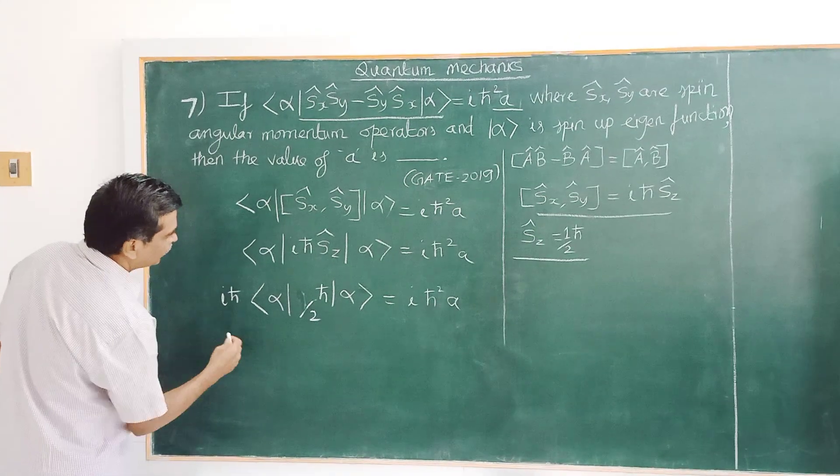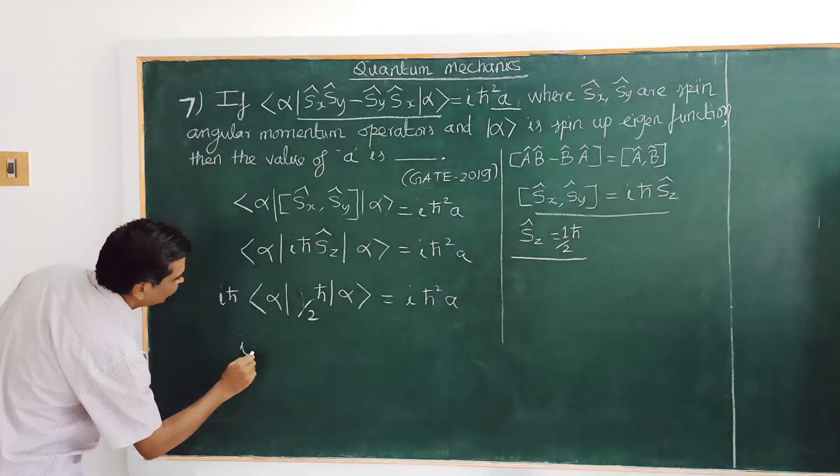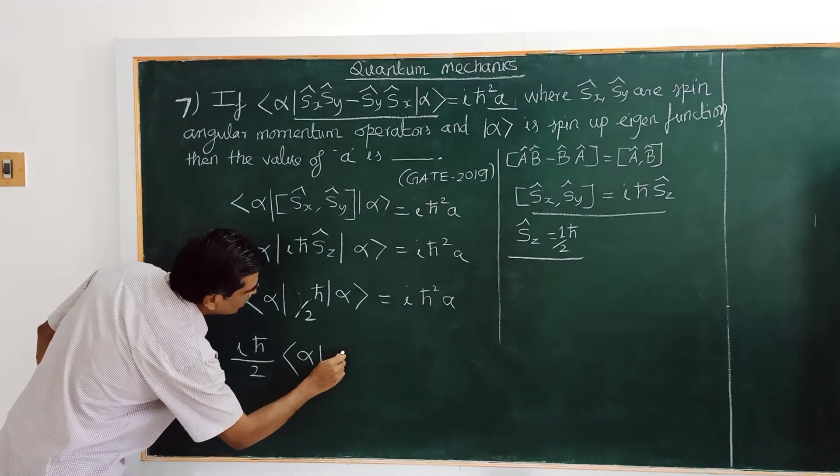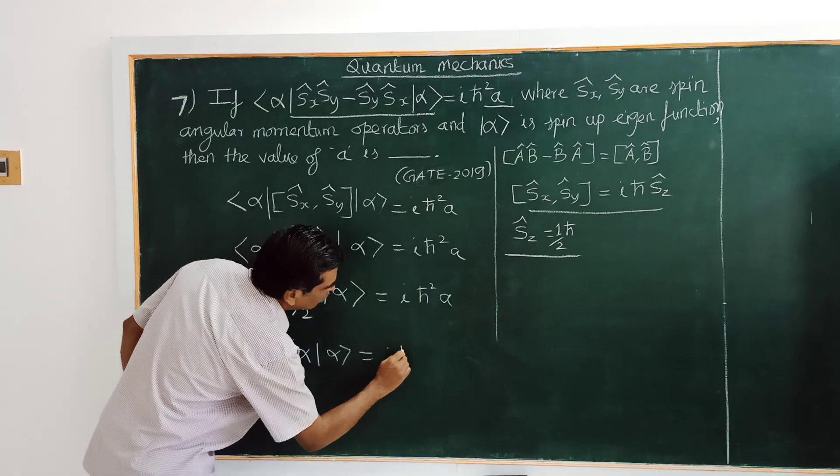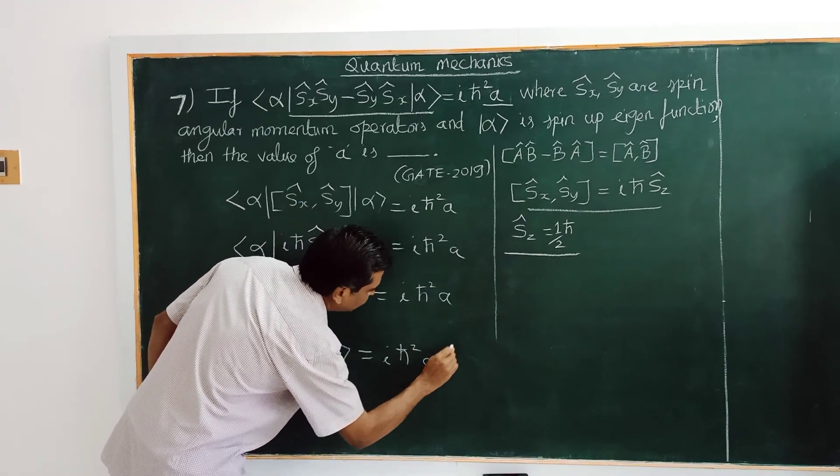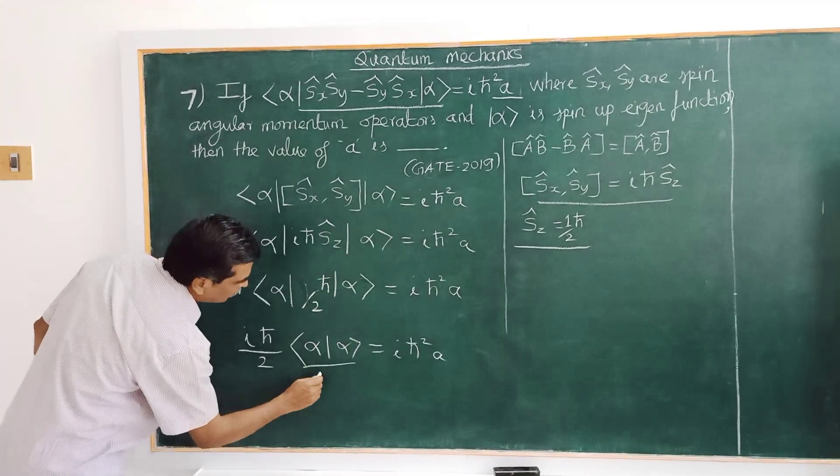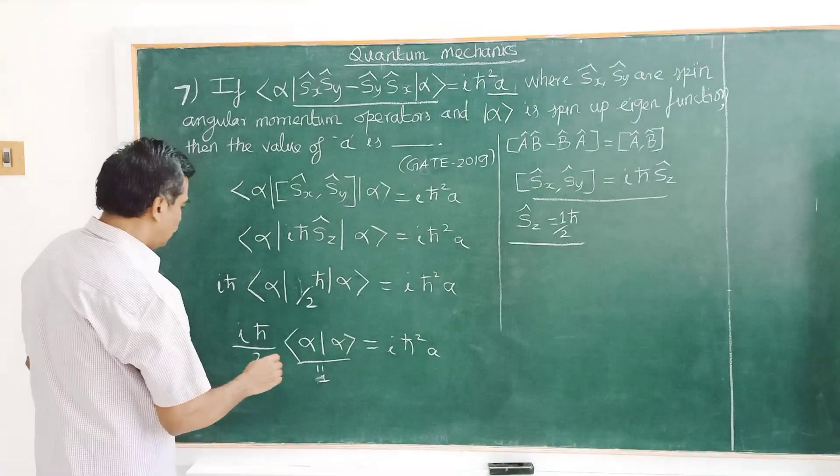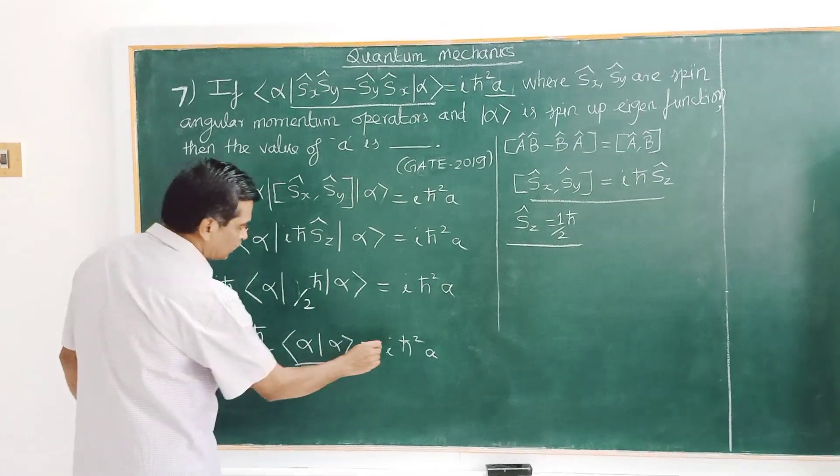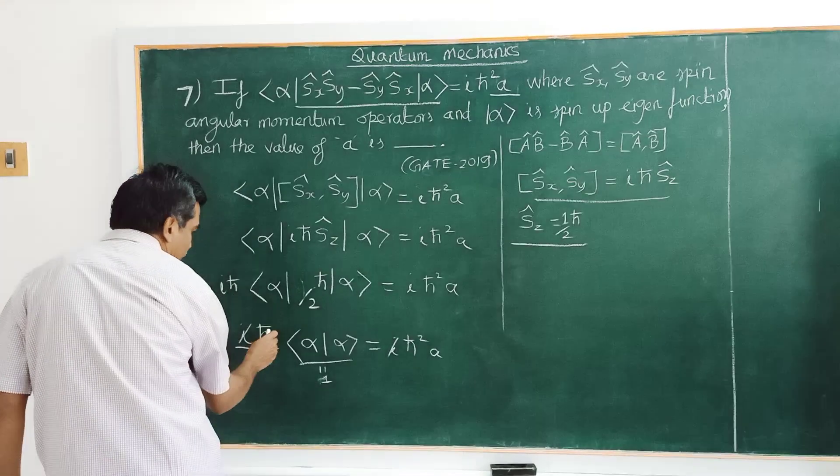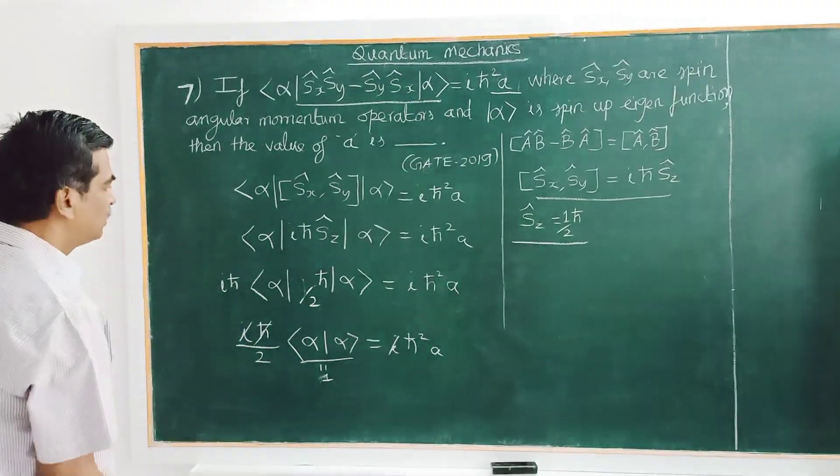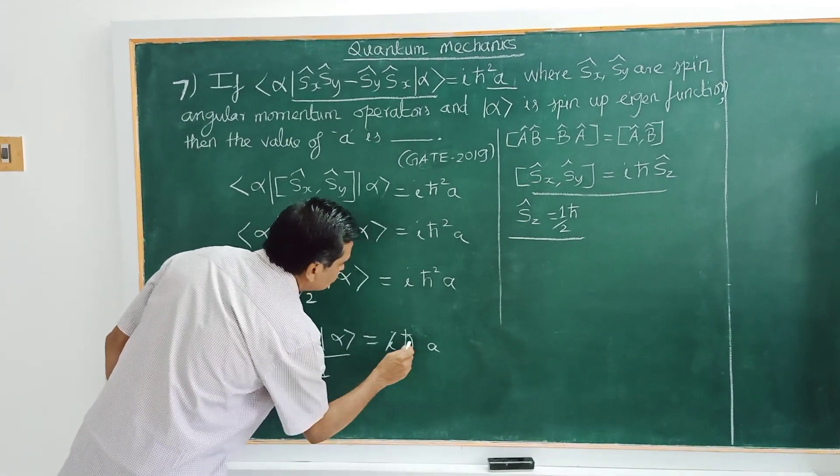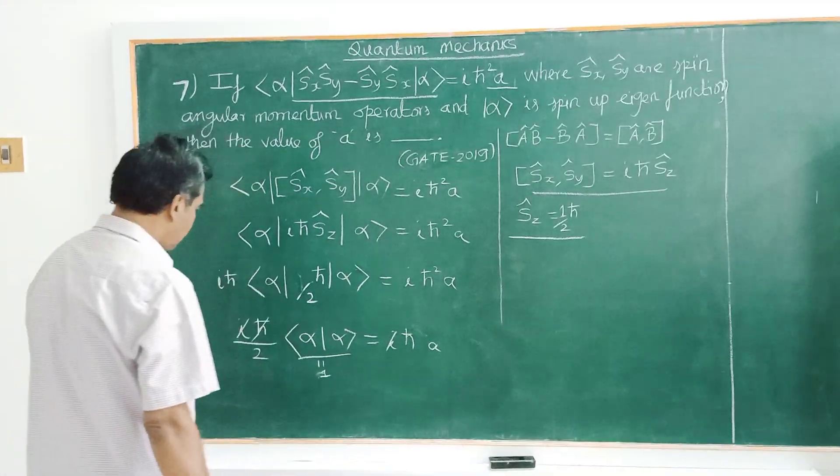Therefore, you can again take it out. According to normalization, this is equal to 1. Therefore, you can cancel this, cancel this, and cancel this.